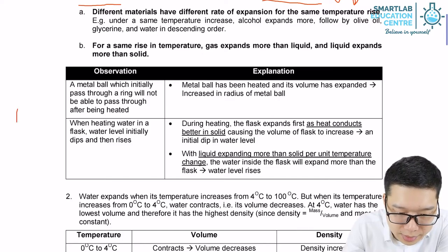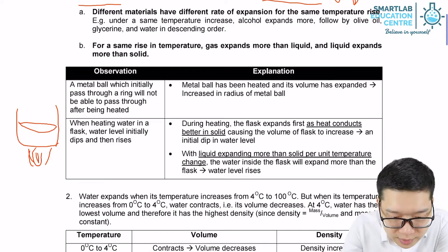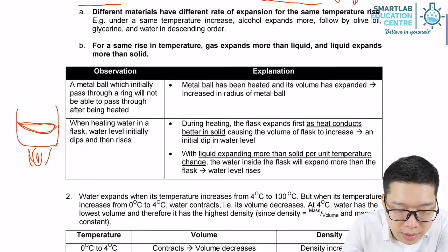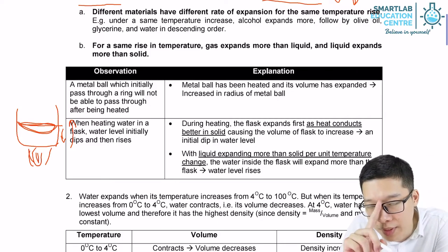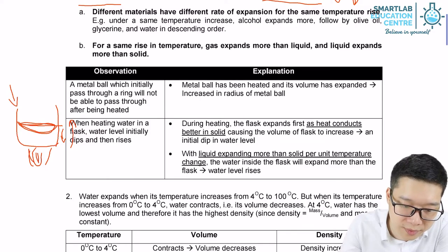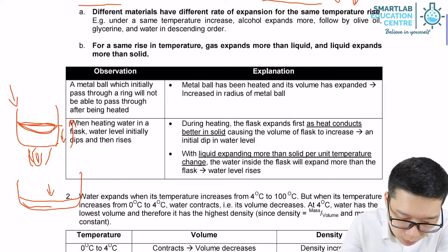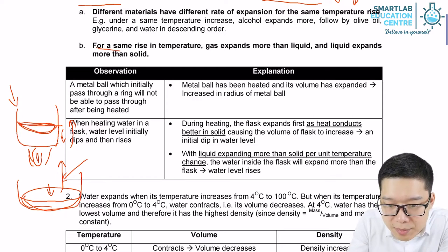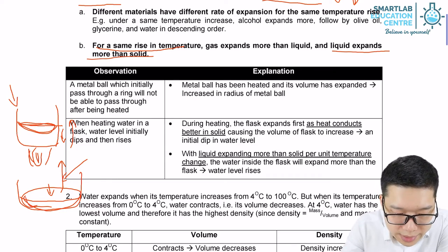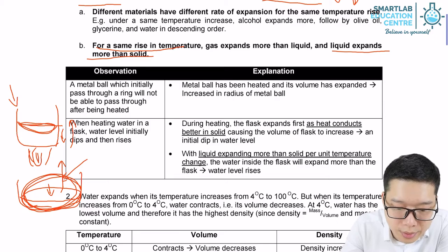The second experiment: if I heat up some liquid using a flask or a beaker, what we observe is the level of liquid will drop first and then rise up again. The reason is that when a small amount of heat is absorbed, the volume of the flask or beaker increases first. In a now-larger container with the same volume of liquid, the water level drops. After that, when the liquid itself absorbs heat, since liquid expands more than solid for the same temperature rise, the increase in volume of the liquid is greater than that of the flask, and that's why the water level rises up again.